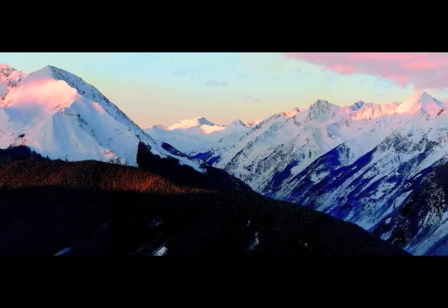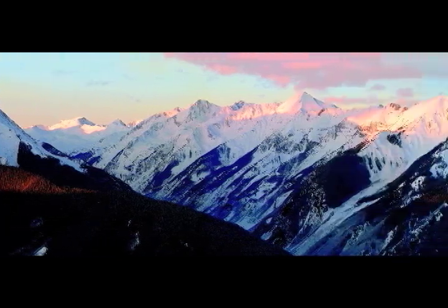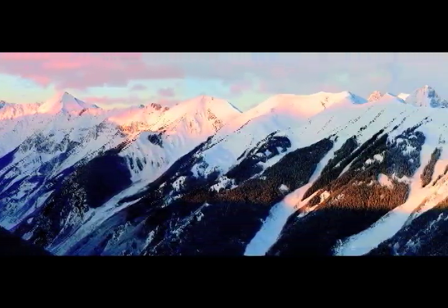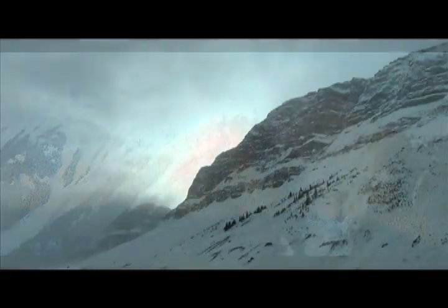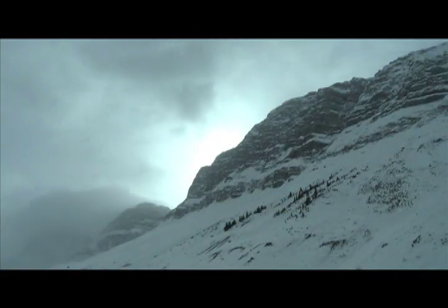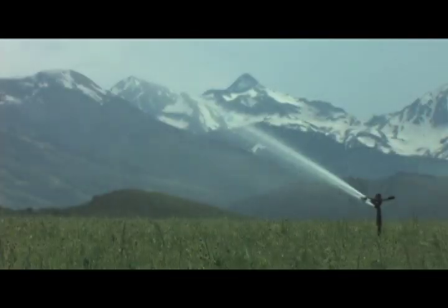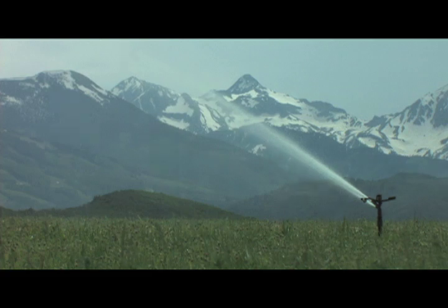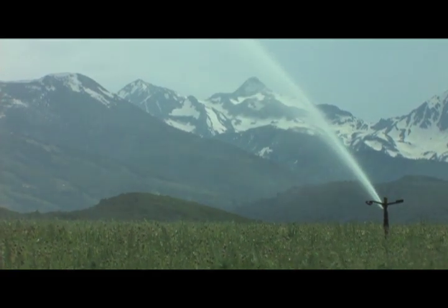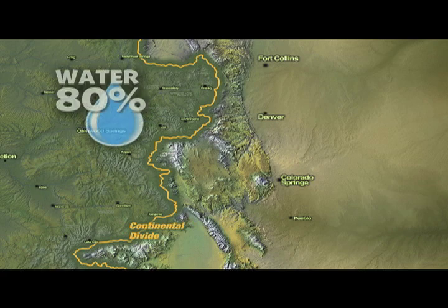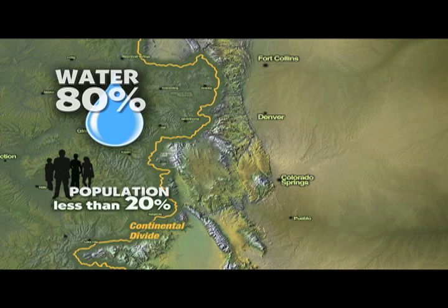Colorado is split by the Continental Divide, the spine of the North American continent. The high peaks and ridges of the Rocky Mountains trap weather systems that produce snow and rain. Snow is the foremost contributor to Colorado's water supply, but nature provides it inequitably. About 80% of the state's surface water originates on the western slope, where less than 20% of the state's population lives.